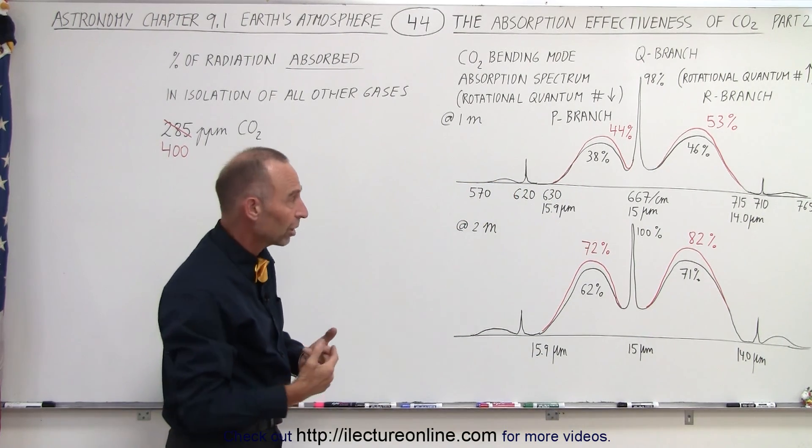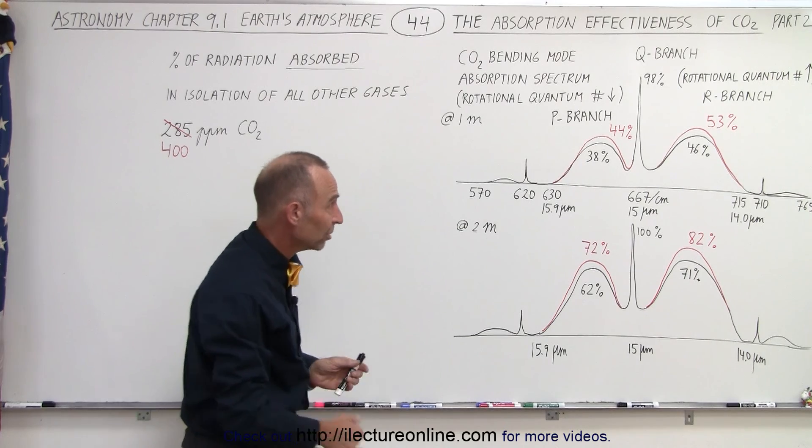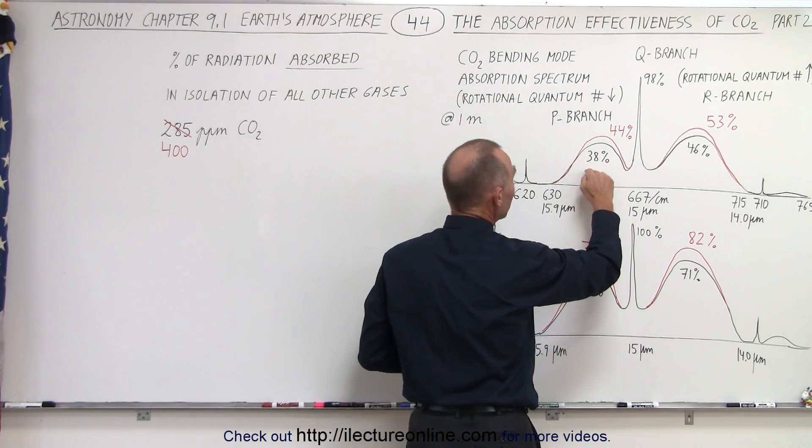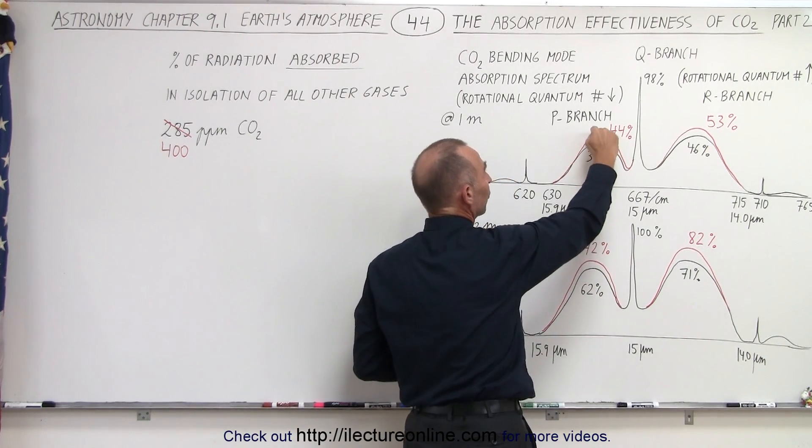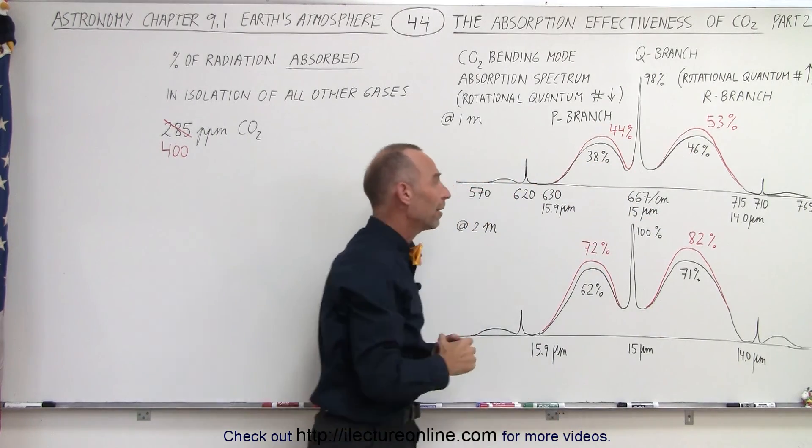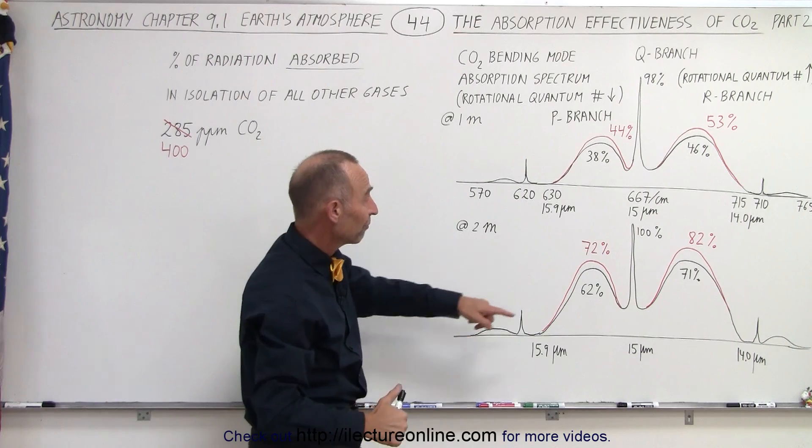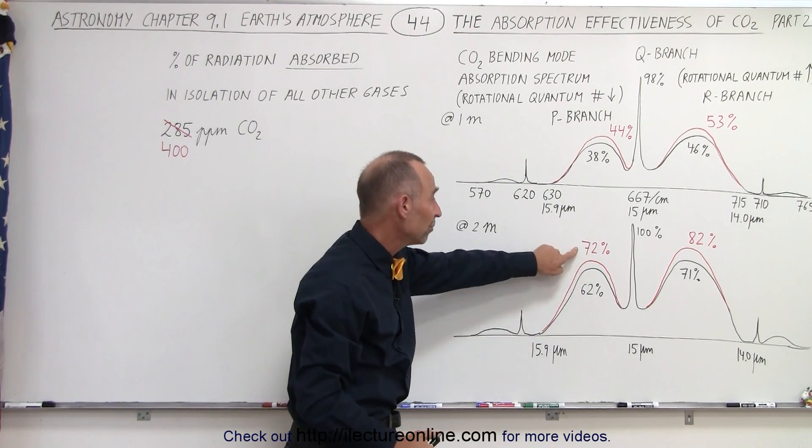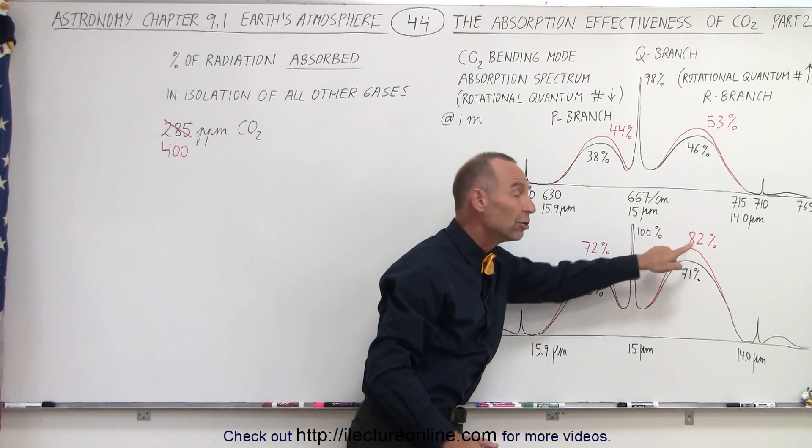But notice with the additional carbon dioxide, about a 40 percent increase, we now see that the P branch has an effectiveness of 44 percent in its peak and 53 percent for the R branch. And at two meters, the effectiveness went from 62 to 72 percent and 71 to 82 percent.